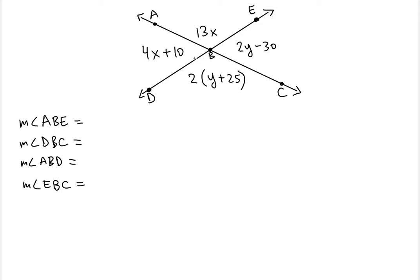You may try to think of vertical angles. You might say DBC is congruent to ABE. Yes, so that means we could set 13x equal to 2 times y plus 25. But the only problem is we would have two unknowns and you can't solve an equation with two unknowns. That's impossible.